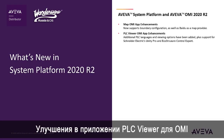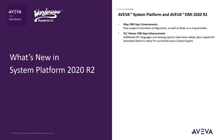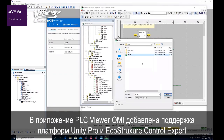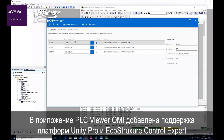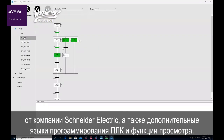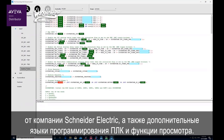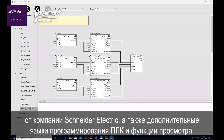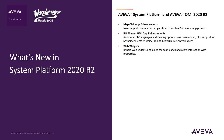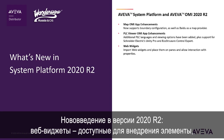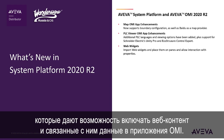PLC Viewer OMI app enhancements. The PLC Viewer OMI app has added support for Schneider Electric Unity Pro and EcoStruxure Control Expert, plus additional PLC languages and viewing options. Web Widgets. New with the 2020 R2 release, Web Widgets are replaceable functions that allow incorporating web and associated content into OMI applications.